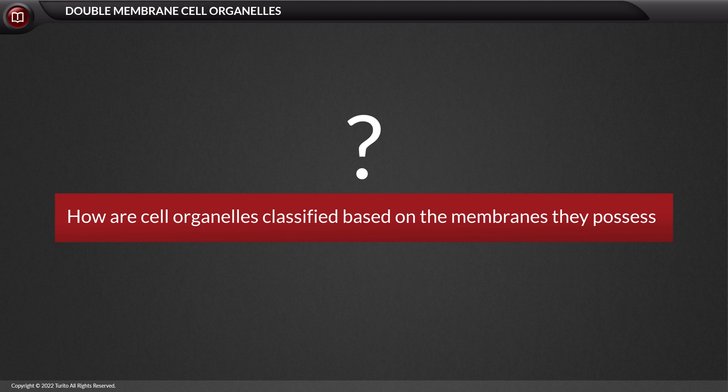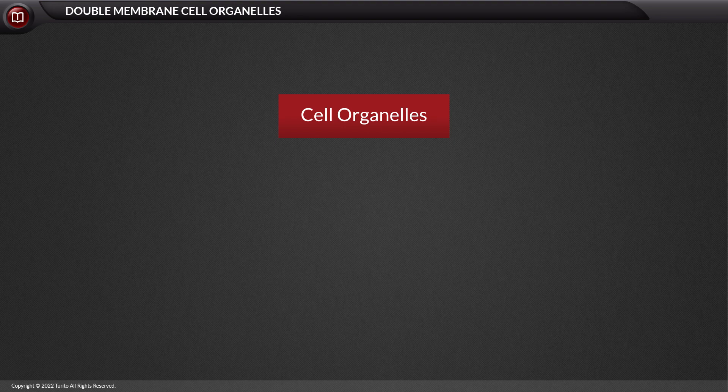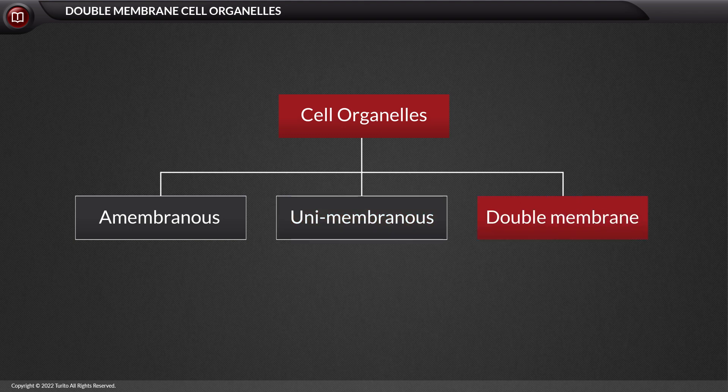How are cell organelles classified based on the membranes they possess? Basically, a cell possesses membrane-bound organelles based on which they can be grouped into amembranous, unimembranous, and double-membrane cell organelles.